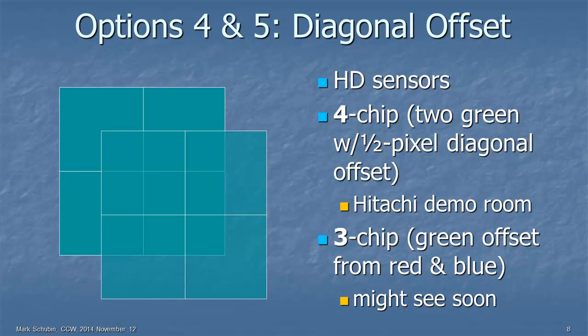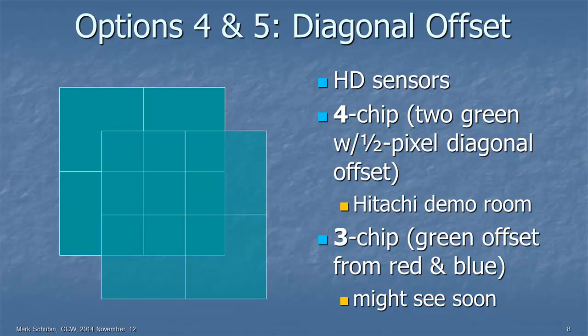Another option is to use regular HD sensors but introduce a diagonal offset of a half pixel so that you're effectively creating 4K resolution. And there are two ways of doing this. One is with four chips, adding a second green sensor with a half-pixel diagonal offset, and that's what you can see Hitachi showing in the demo room. And another option would just be to stay with three chips but to simply offset the green from the red and blue. And you might be seeing that soon from a major manufacturer.